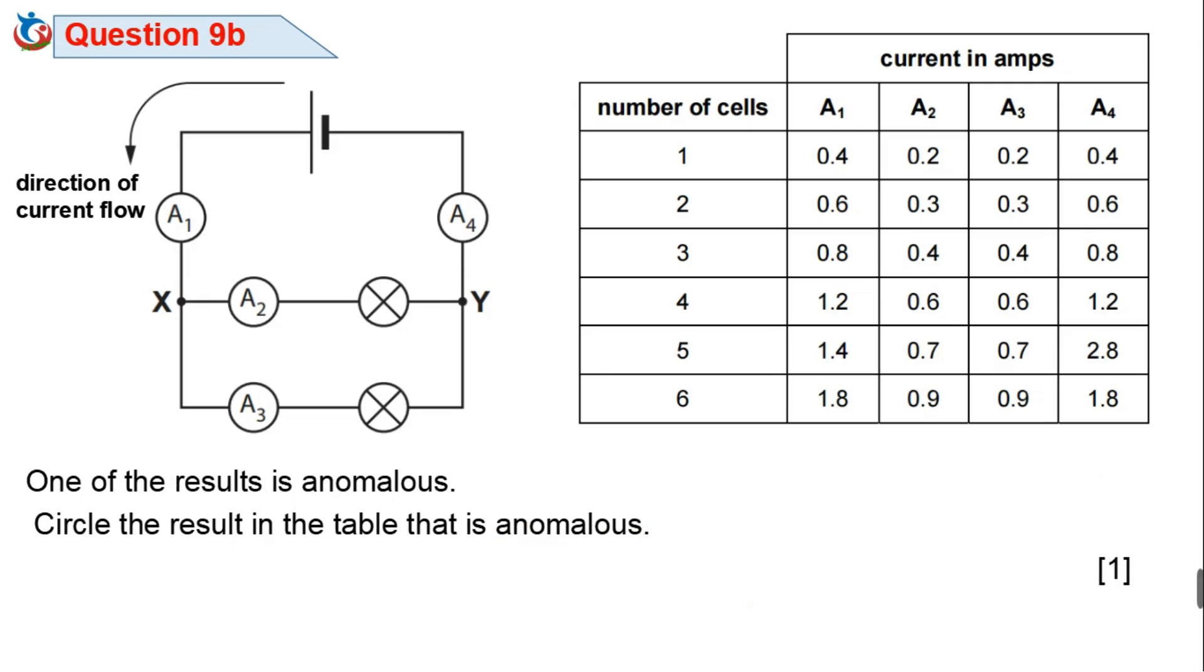Question 9b. One of the results is anomalous. Circle the result in the table that is anomalous. The first thing is, what is anomalous result? An anomalous result is simply a kind of result that is different from what is normal or from what is expected. Now take a good look at the table of results.